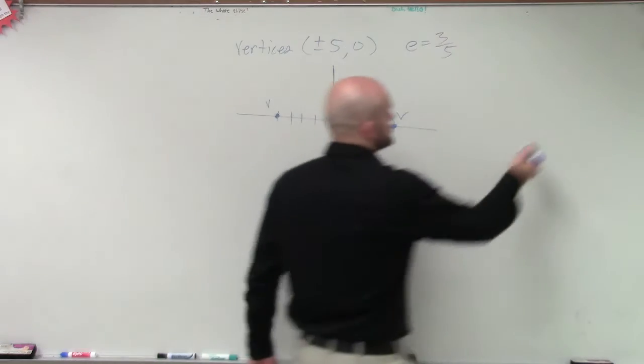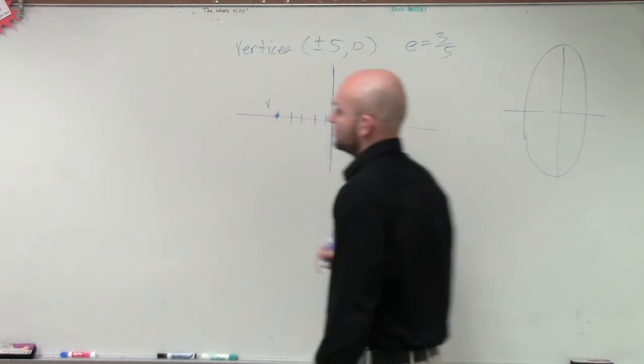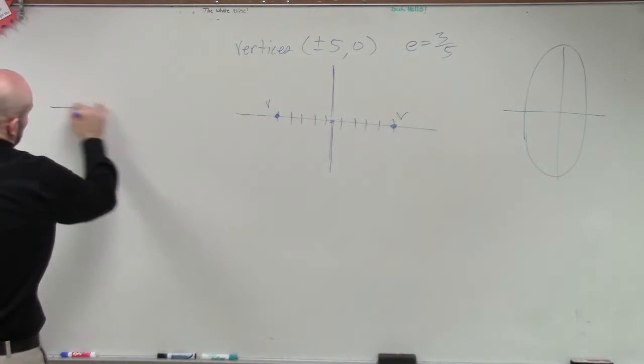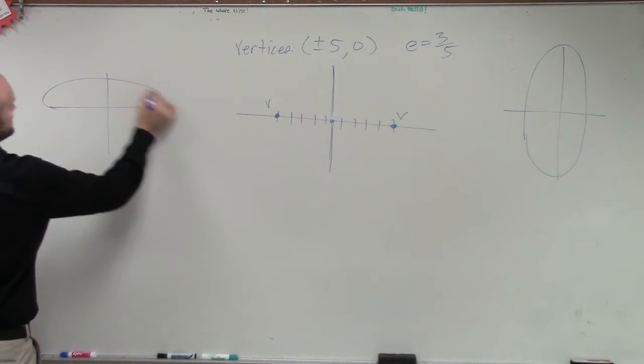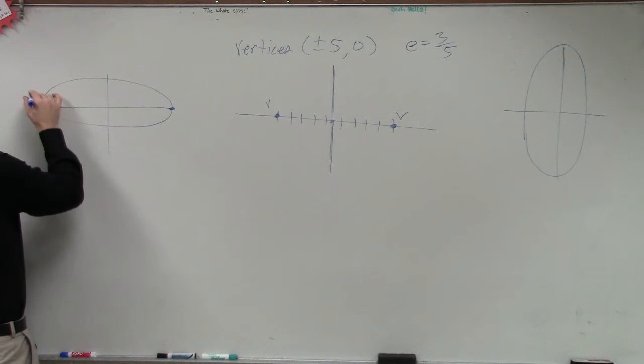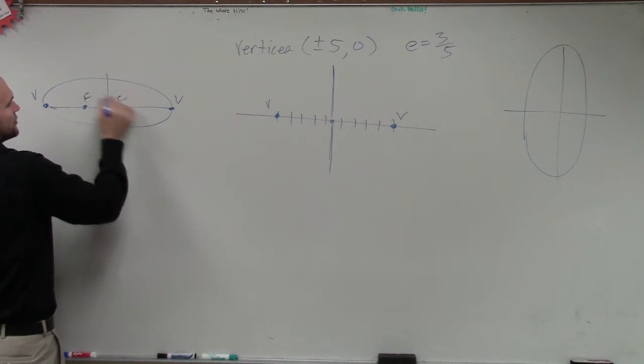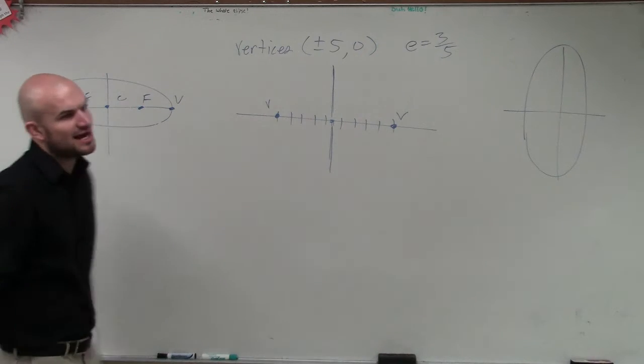Now, ladies and gentlemen, there's two types of graphs we have. We have ones that look vertical, and we have ellipses that are horizontal. For the ones that are horizontal, we said here's your two vertices, here is your center, and here are your foci. They were all on the major axis.